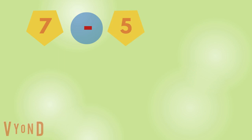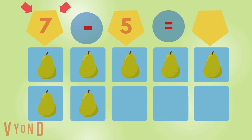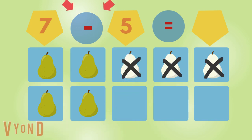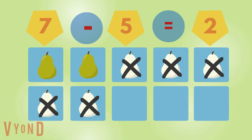Excellent. Two, three, four, five, six, seven. Seven pears. One, two, three, four, five. One, two. There are two pears left.